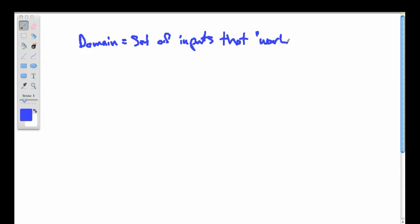That can mean a lot of different things. We will see what exactly that means, but it's a set of all inputs that I can actually put into my function and get something out of it. And the range of a function is the set of outputs that can be obtained.